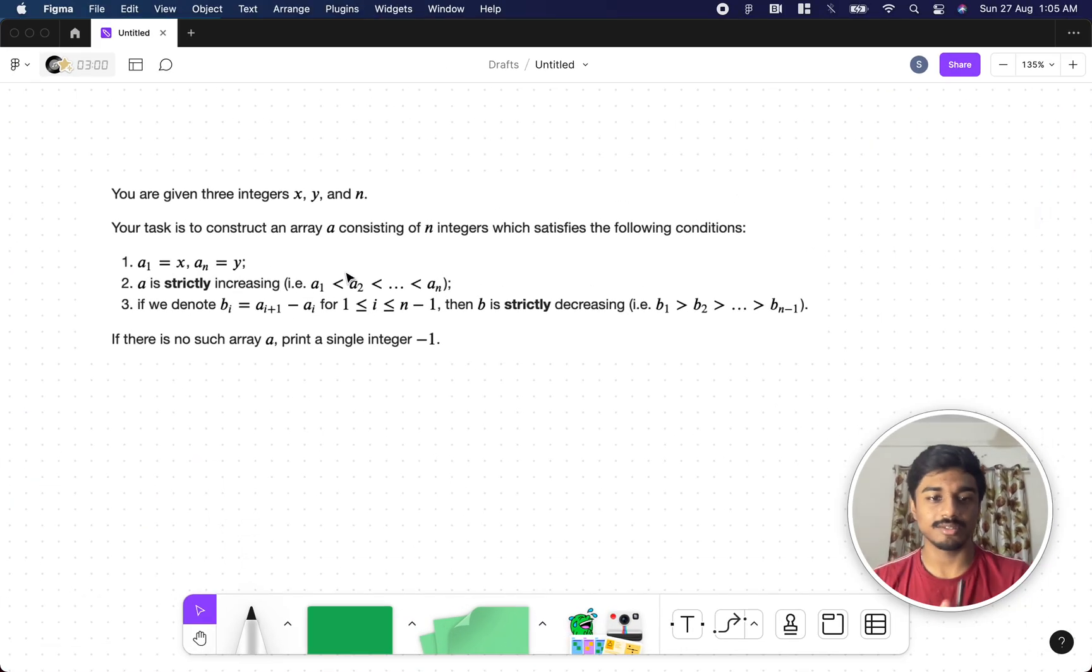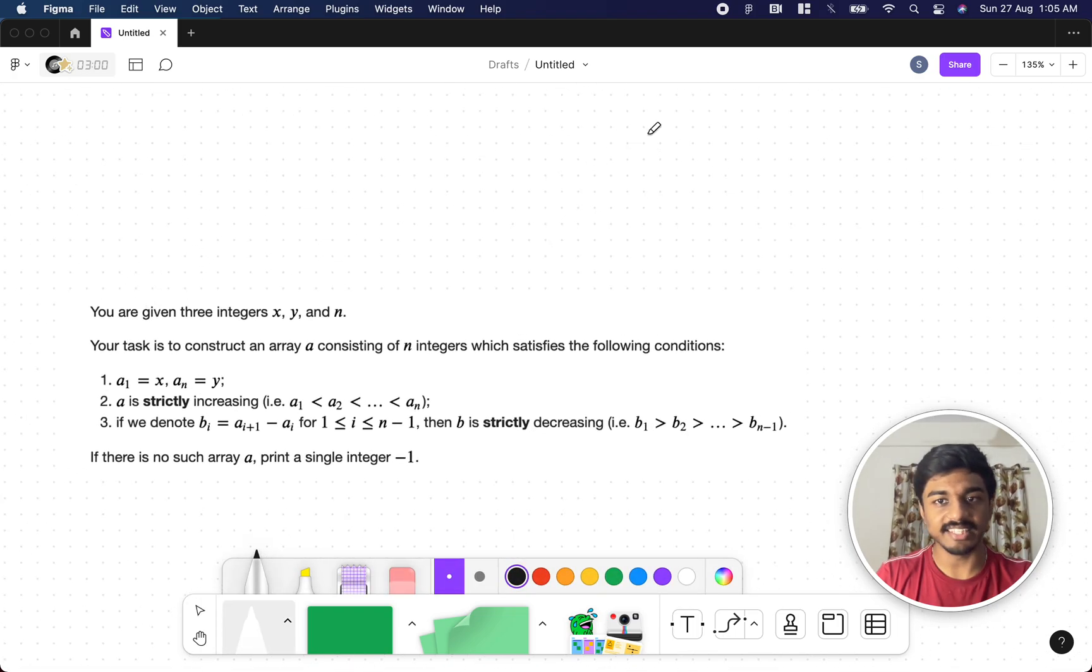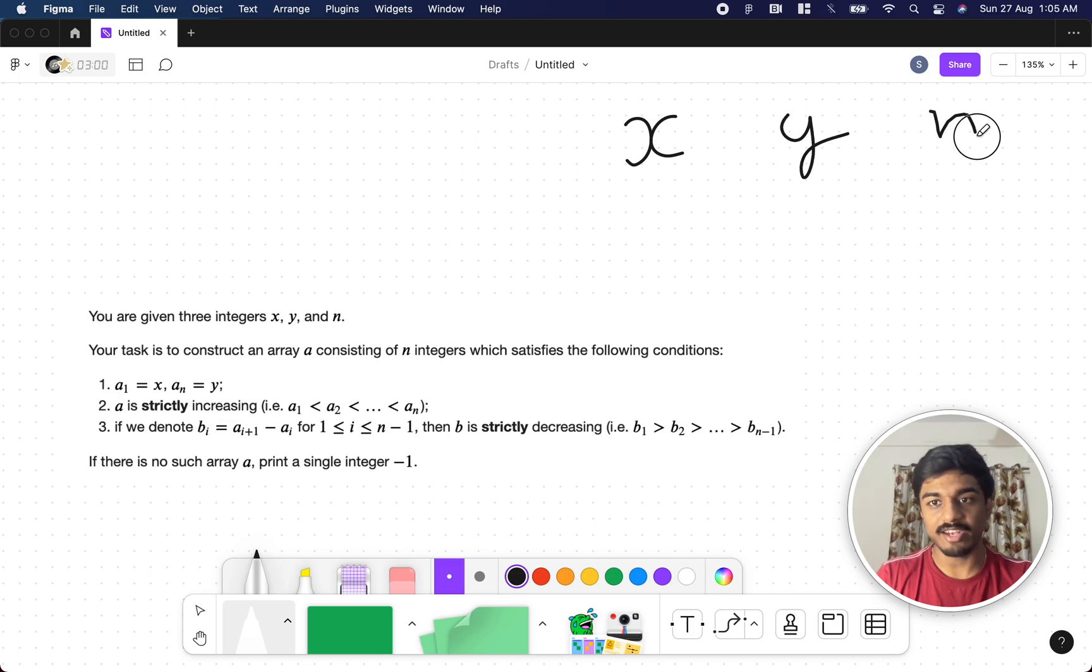Let's see what the problem states. So they are telling that we'll be given two integers x and y and also n. Your task is to construct an array consisting of n integers that satisfies three conditions.